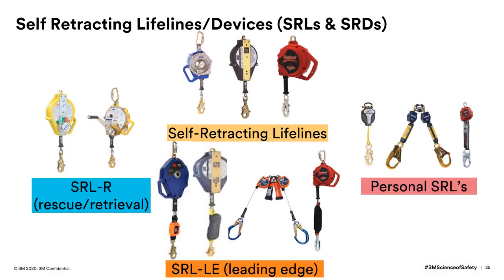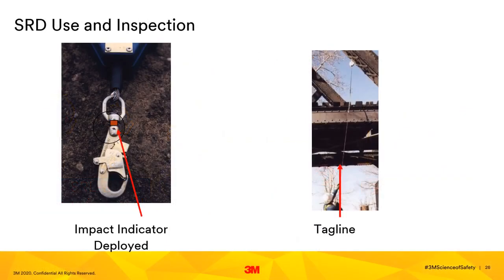In many instances, self-retracting devices are advantageous over lanyards — they require shorter fall distances, most are recertifiable, and they engage once the fall has begun. Just like harnesses and lanyards, self-retracting lifelines need to be inspected prior to use. Check the housing to ensure it's not cracked or broken. Check the cable or web for broken strands or fibers. Check the hooks for rust, pitting, or corrosion. Check the impact indicators to make sure they have not been deployed. Always use a tagline instead of leaving the cable or web extended for long periods of time, as this protects the cable and reduces the possibility of damaging the coil spring.